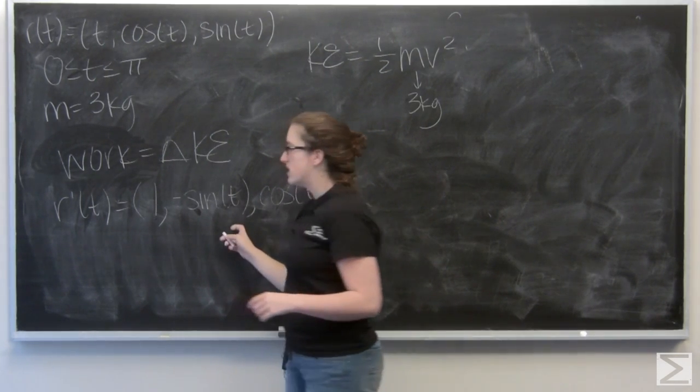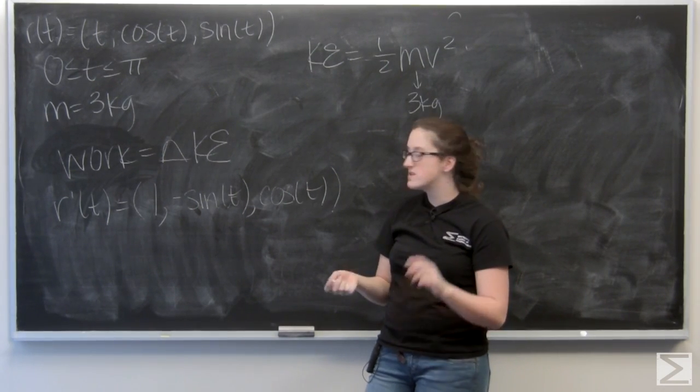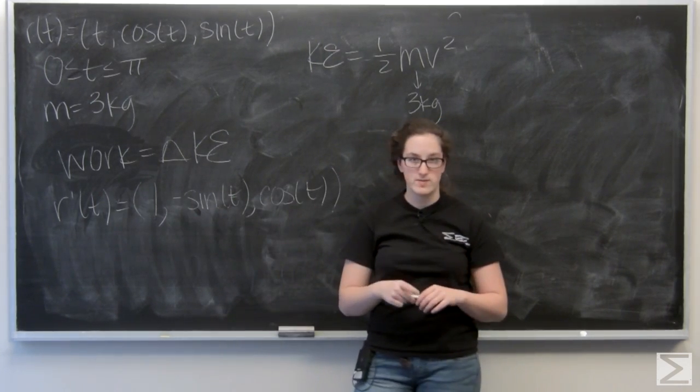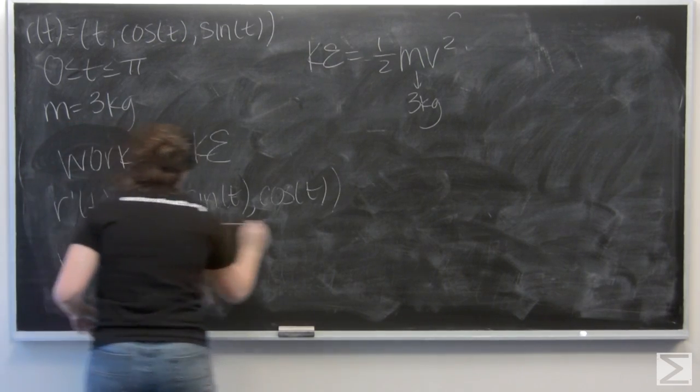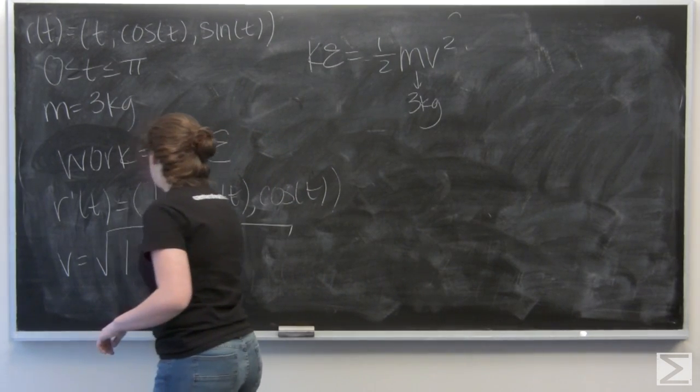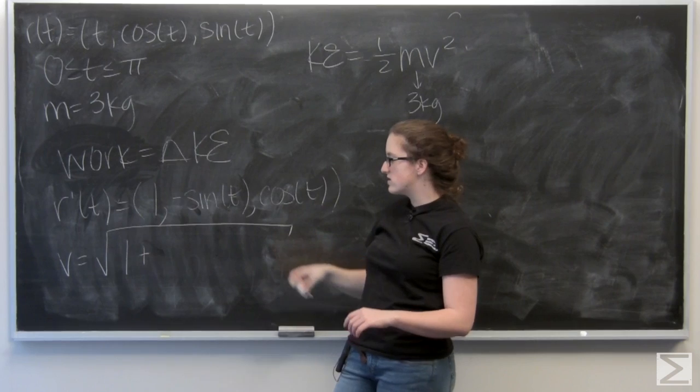So, this gives me a velocity vector, but I can find its magnitude to get the actual velocity. So, remember that's kind of like the distance formula. It's the square root of each of the components squared. So, I have the square root of 1 plus sine squared t plus cosine squared t.